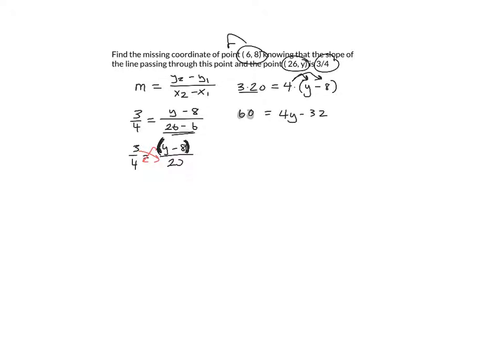And now I have a two-step problem to solve. So plus 32 to both sides. So plus 32. I got 92 is now equivalent to 4y. Divide by 4. Divide by 4. And I get y equals 23. And there you have it. I'm done.